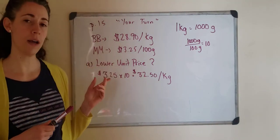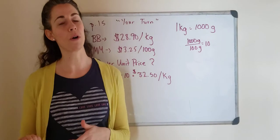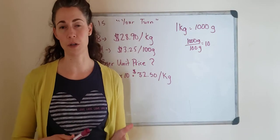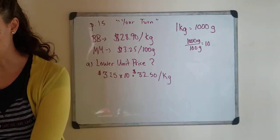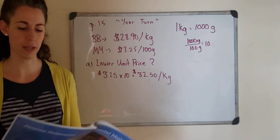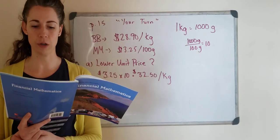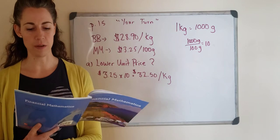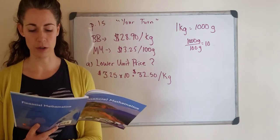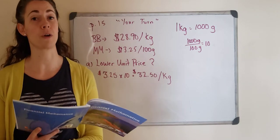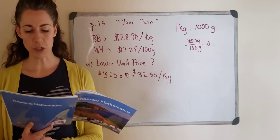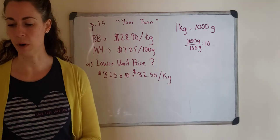I'm going to go over that right now with you. You may want to try it yourself just to see if you know what you're doing. So I'm going to read it to you. The Butcher Block sells beef tenderloin for $28.90 per kilogram. The Meat Mart sells beef tenderloin for $3.25 for 100 grams. Which store offers the lowest unit price?